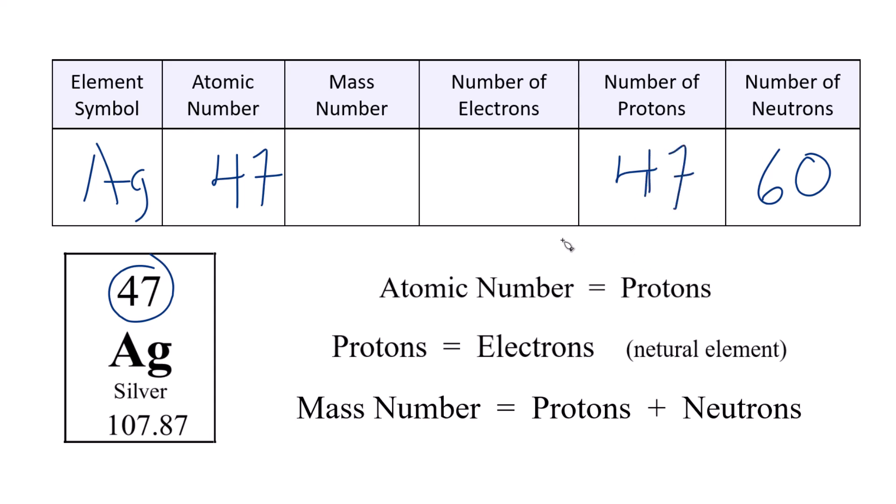And since it's a neutral atom here, we'd have 47 electrons. Add these two numbers together, 60 plus 47, that gives us 107 as our mass number. And that's it for silver. But what do you do if you have one of those ions where you have a positive or a negative charge? Let's try one of those.